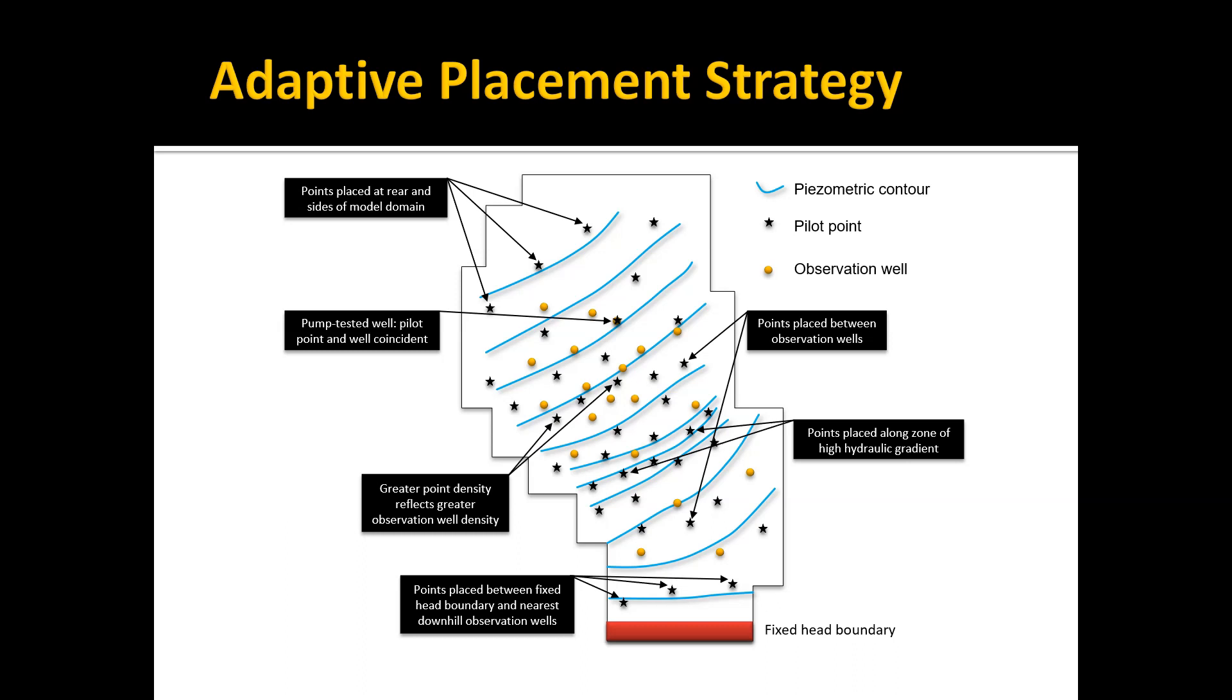You should always put pilot points between your observation wells and any fixed or head-dependent boundaries. These are some general guidelines and a good rule of thumb to use in setting up your points. But again, sometimes it's best just to throw a few points down and try it, then look at your result and see where your model errors are. Start adding more points. I always recommend you start with fewer points and then only add pilot points as needed to get a good result. This is very much an iterative process.